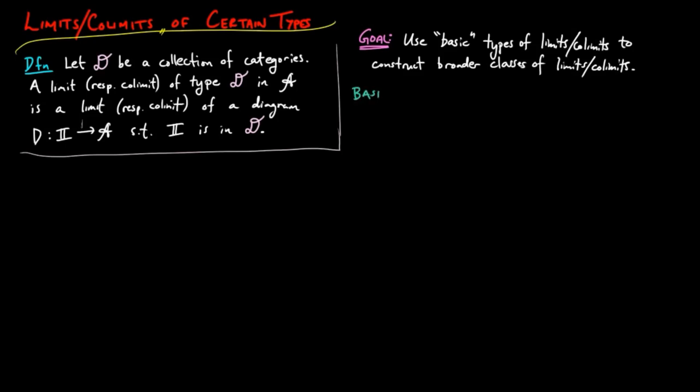The basic forms of these results will be something like a category has limits of type B, which we can shorten to B limits, if and only if a category has limits of type D or D limits. Here the collection of categories in B will be of a basic type and D will be some broader collection.